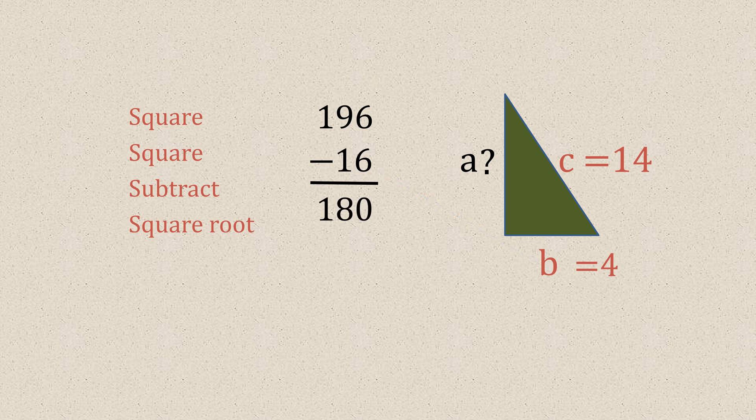So we'd use our calculator, square root button, 180, gives us 13.4 to one decimal place.